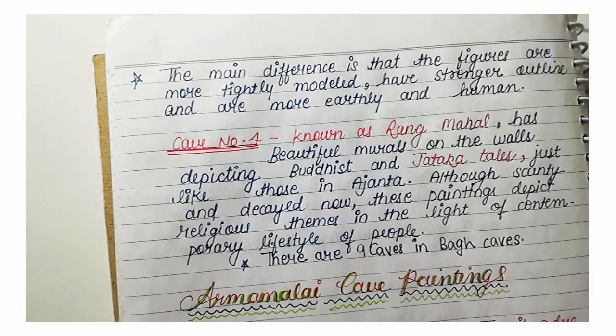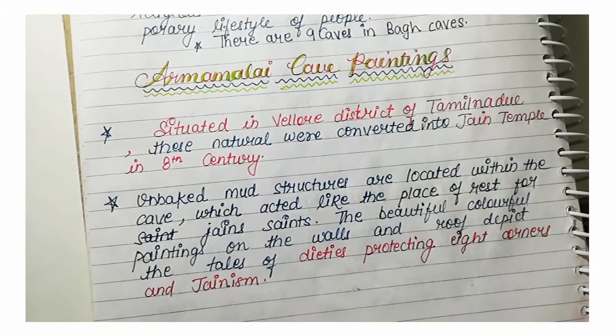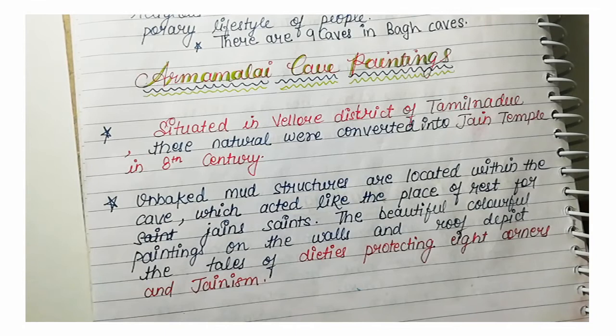Although the paintings are in a deteriorated state, they depict religious themes in the light of the contemporary lifestyle of people. There are 9 caves in Bagh. The paintings date from the Gupta period up to the 8th century, when these caves were made.